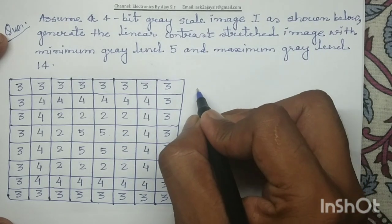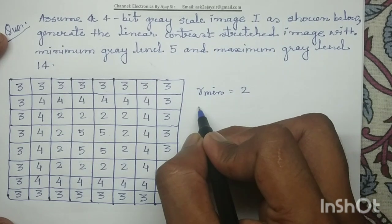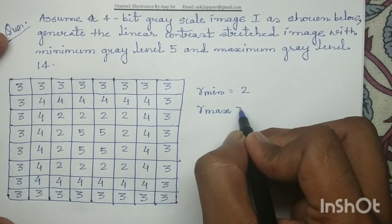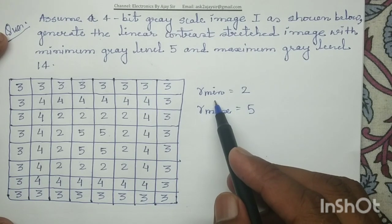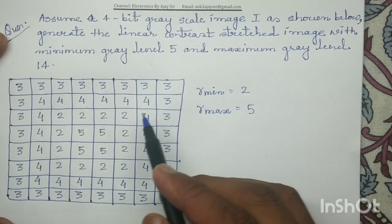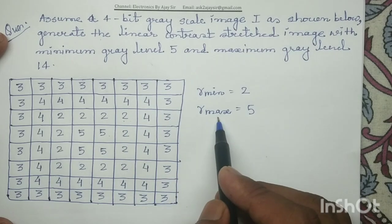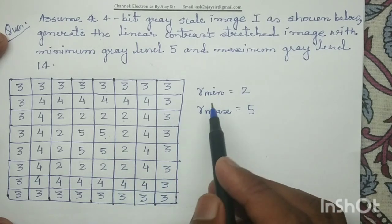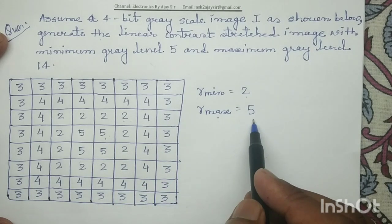So the value of r_min is equal to 2 and the value of r_max is equal to 5. Here, r_min is the minimum gray level in the input image, which is 2, and r_max is the maximum gray level in the input image, which is 5.